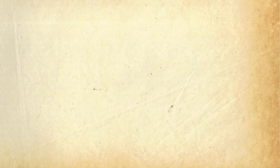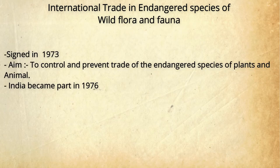The next convention deals with the international trade on endangered species of wild flora and fauna, signed in 1973, also known as CITES. The aim of this convention was to control or prevent international commercial trade in endangered species or products derived from them. India became part of this convention in the year 1976.